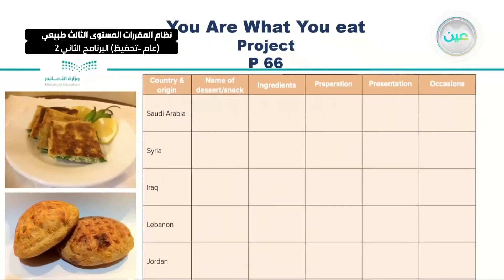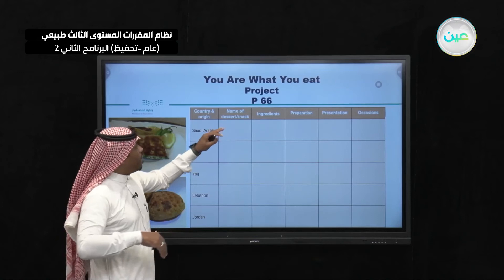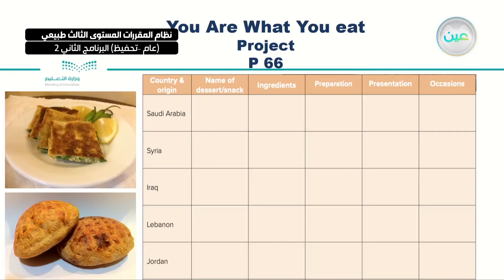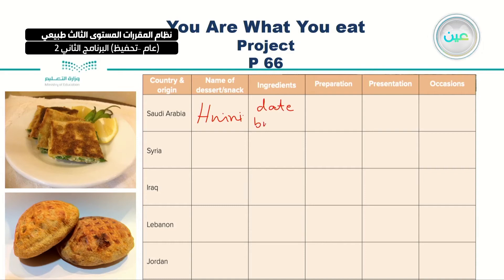Use this chart to write notes. For example, if you are from Saudi Arabia, you should name the desserts. I'm talking about a famous dessert in Saudi Arabia called Hineni — what are its ingredients? It is made with dates and sometimes bread. Then find another country and try to compare between them — for example, Syria, Iraq, Lebanon, Jordan. You can add two more countries in the same chart, whichever countries you would like to write about.